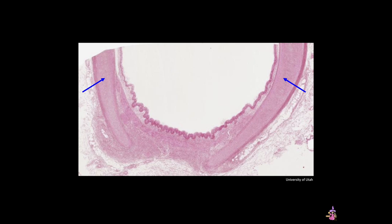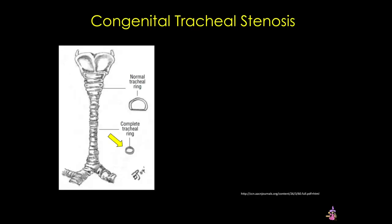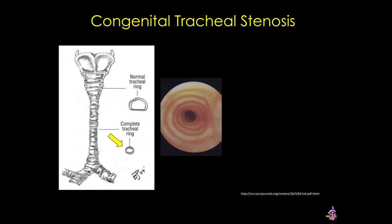Recall that the trachea has C-shaped hyaline cartilage rings that give the trachea the ability to resist compression, but yet allow flexibility. But what happens if these rings are complete? In children who have complete tracheal rings, the trachea has one or more O-shaped rings. This is called congenital tracheal stenosis. Here's an image of a trachea with complete tracheal rings as seen via bronchoscopy.